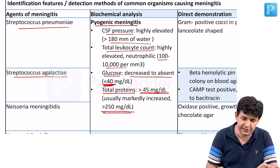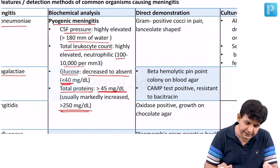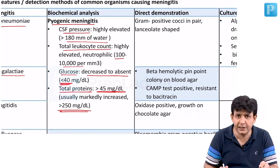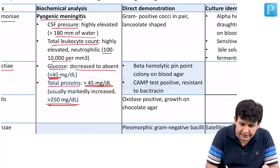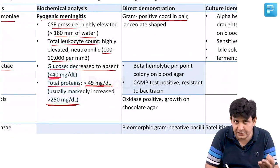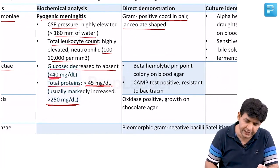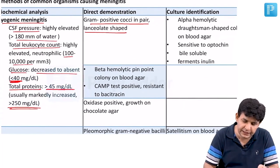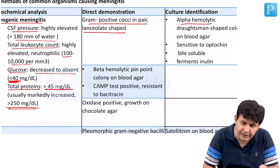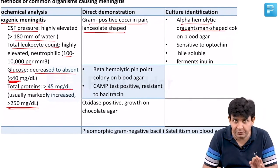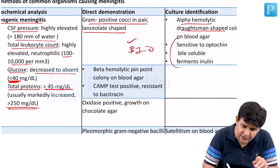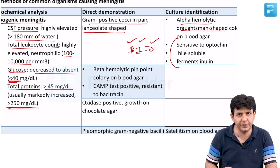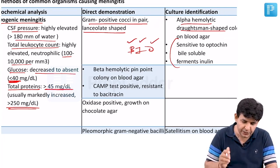Streptococcus pneumoniae is a gram-positive coccus in pairs - a diplococci with lancet shape. For cultural identification, it forms alpha-hemolytic draughtsman-type colonies. It is bile soluble, inulin fermenter, and optochin sensitive.